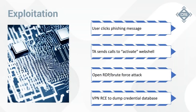In the exploitation phase, if a user clicks that phishing message, it drops something on their system and starts doing nasty things. The threat actor may send the call to activate the web shell pushed down earlier. We also see a lot of open RDP exposed to the internet, where they brute force their way in. Another big one: remote code execution vulnerabilities in firewalls that let them dump the whole VPN credential database, brute force that on their systems, and then those credentials are reused on the network so they can VPN in and RDP into systems and go to town.